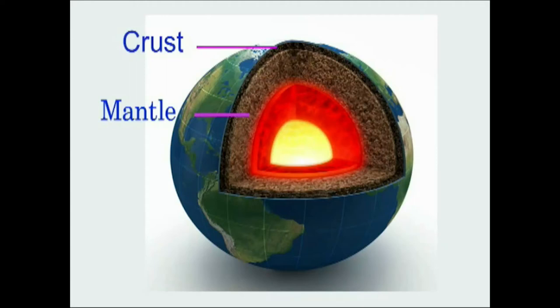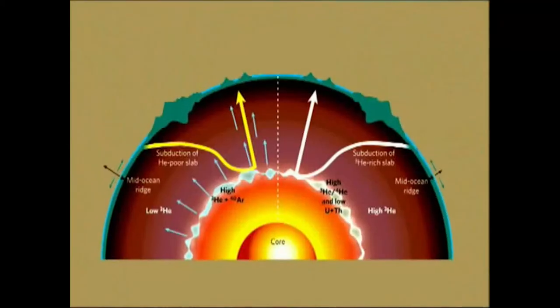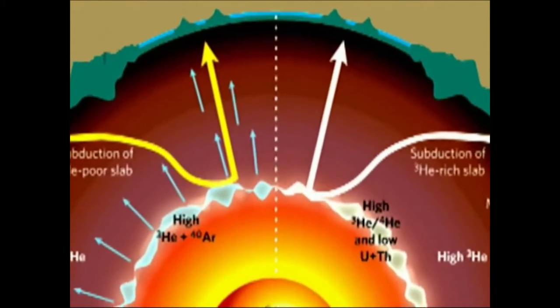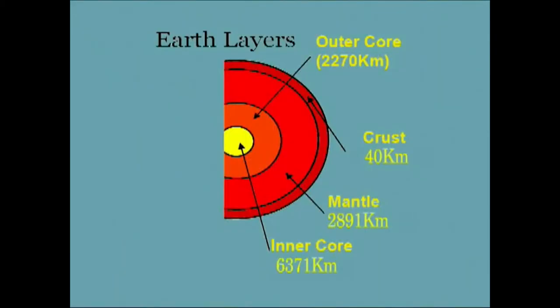In the previous part of the section, we have seen that the origin of the mantle is associated with the origin of the core. The mantle is such a huge volume that it is almost impossible to sample it. There is a cover of crust, on average 40 kilometers thick, that hides the mantle from our direct observation.